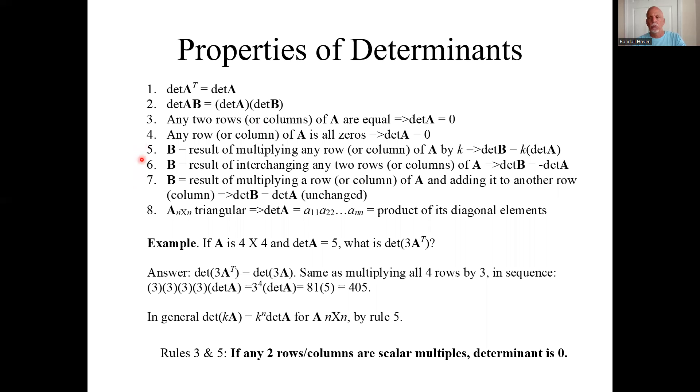Then we get into the row operations. Remember, there were three row operations. One is you can multiply a row by a scalar. Now we can talk about columns. If you multiply any row or column by a scalar k, the determinant is k times the original determinant. That's just one row.